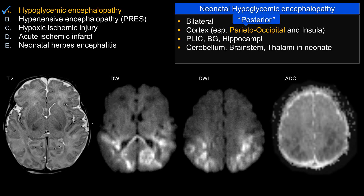In neonates, the cerebellum, brainstem, and the pulvinar thalami tend to be involved as well. And this can, of course, occur not uncommonly with hypoxic ischemic injury.